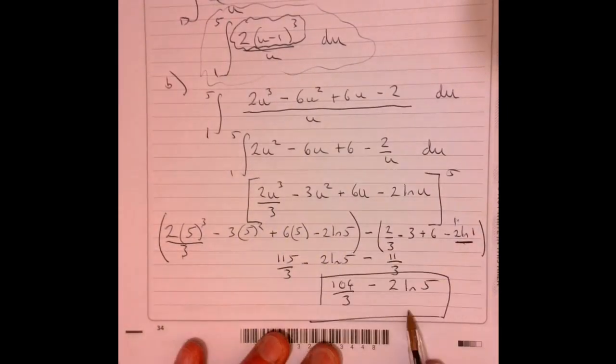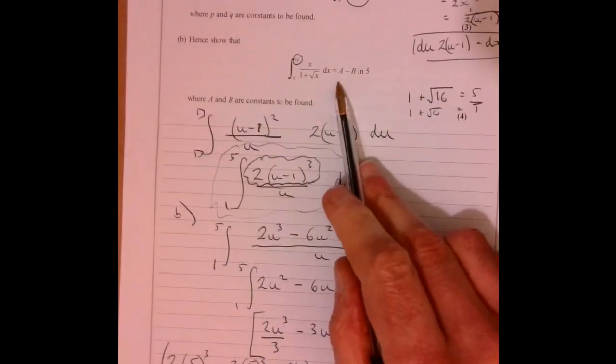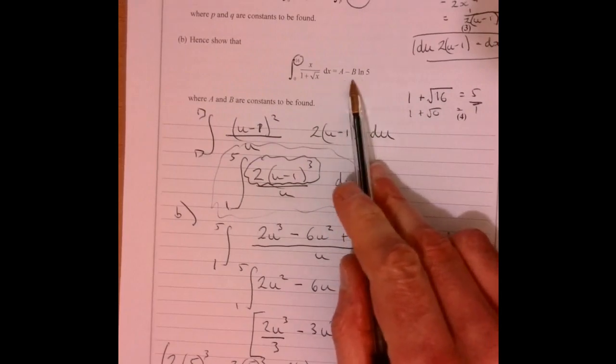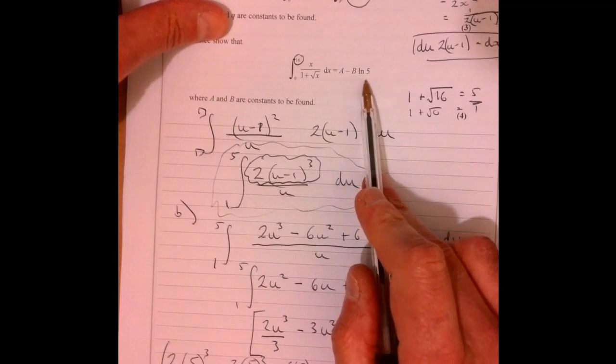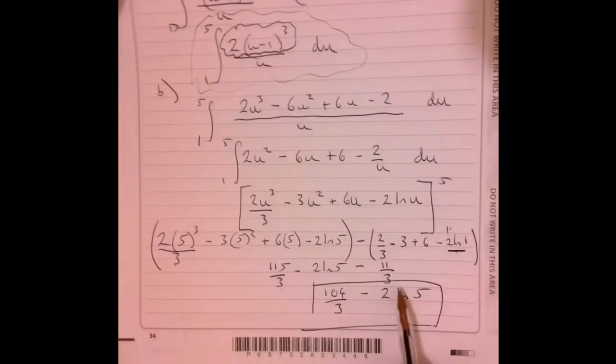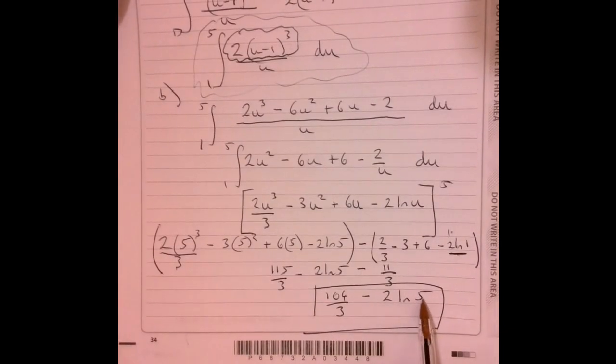And just last little check, make sure it makes sense. Where were we trying to get to? Yeah, we're happy. We've got something. It's in the same kind of form as what we've got here. It's the ln 5. Look, that just makes me feel pretty confident that I've done the right thing.